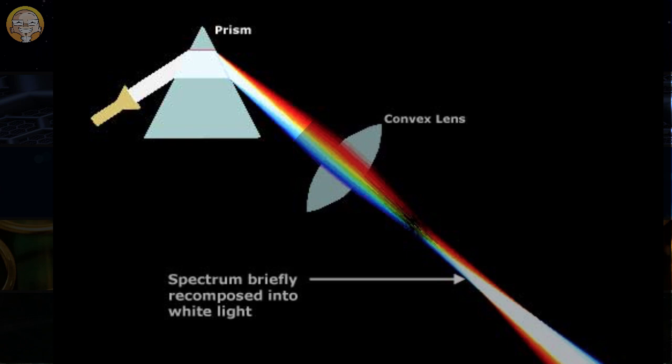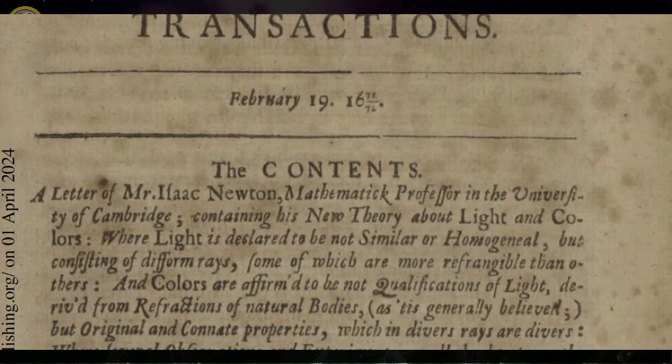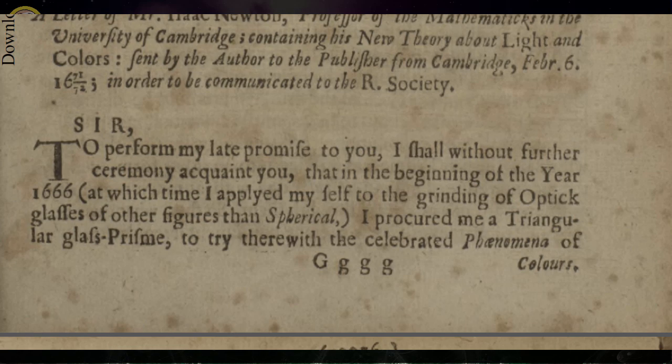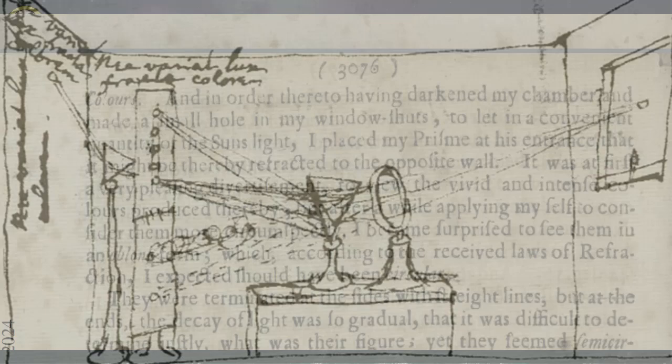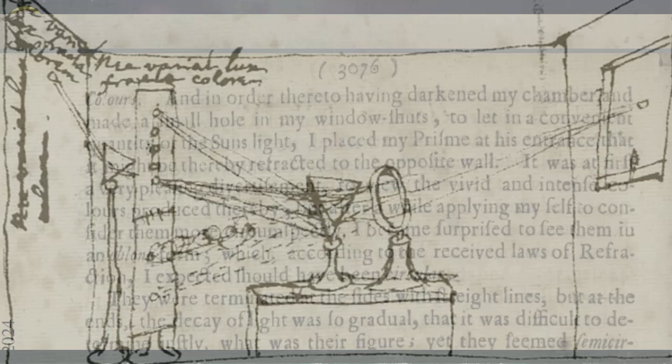Newton's experimentation with light is described in a famous letter he wrote to the Royal Society which was later published in the Philosophical Transactions of the Royal Society in 1671. In that letter he describes exactly how he conducted the experiment and he clearly describes using a lens, not a prism, to recombine the colors into white light.